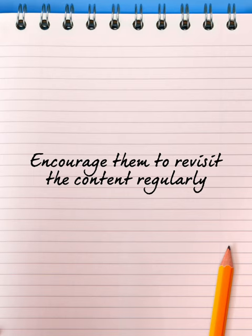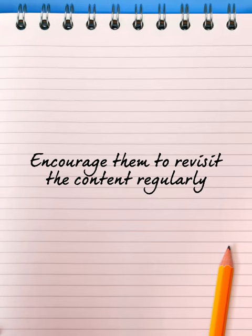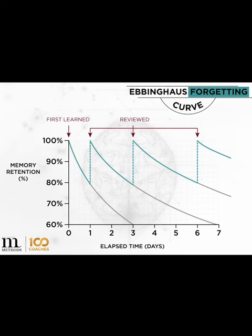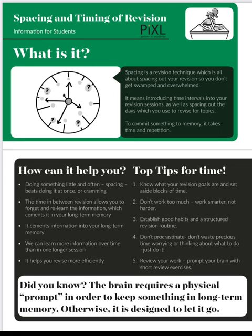Encourage them to revisit the content regularly. Remembering the information is the first step for students in mastering higher level skills such as explaining, analysing and evaluating. The Ebbinghaus forgetting curve shows us how information can be lost from our memories over time if we don't strive to retain it. The more frequently the information is revisited and used, the more likely it is to move into the long-term memory. Unfortunately, many young people do report that they find cramming to be fairly effective, but research does show that revisiting learning frequently is much more effective than mass revision.